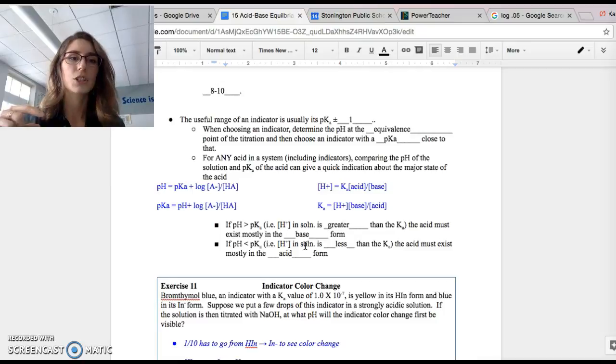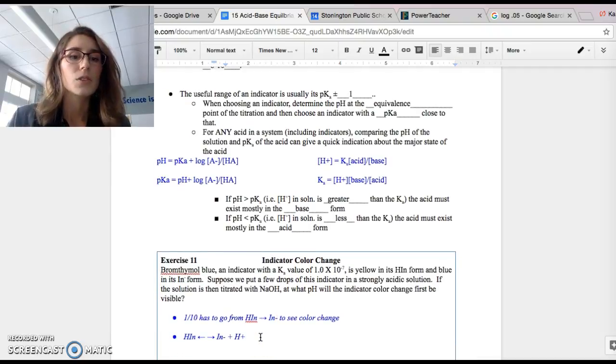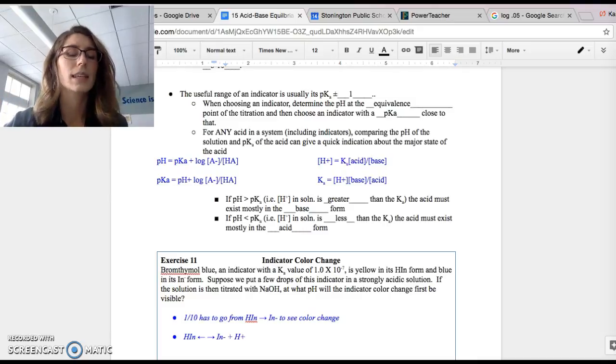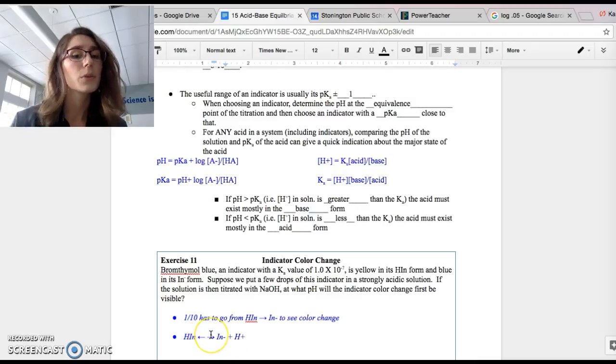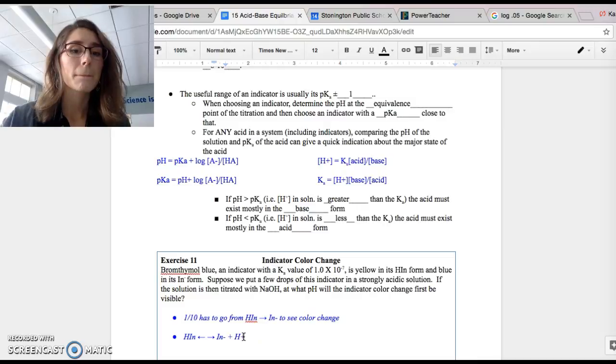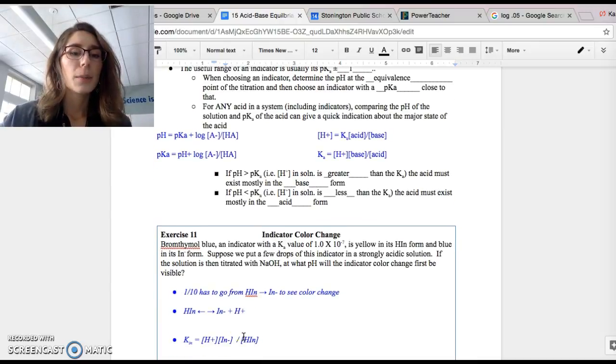So the thing to remember here is that a color change occurs. We start to notice a color change when one-tenth of our indicator goes from the acidic form to the basic form. So we have to see one-tenth of the indicator become dissociated. So let's write out the reaction that's happening with the indicator here. Don't worry about the titration going on. Let's think about what's happening to the indicator. So the indicator is HIN. It undergoes a reversible reaction to its basic form, IN minus and H plus.